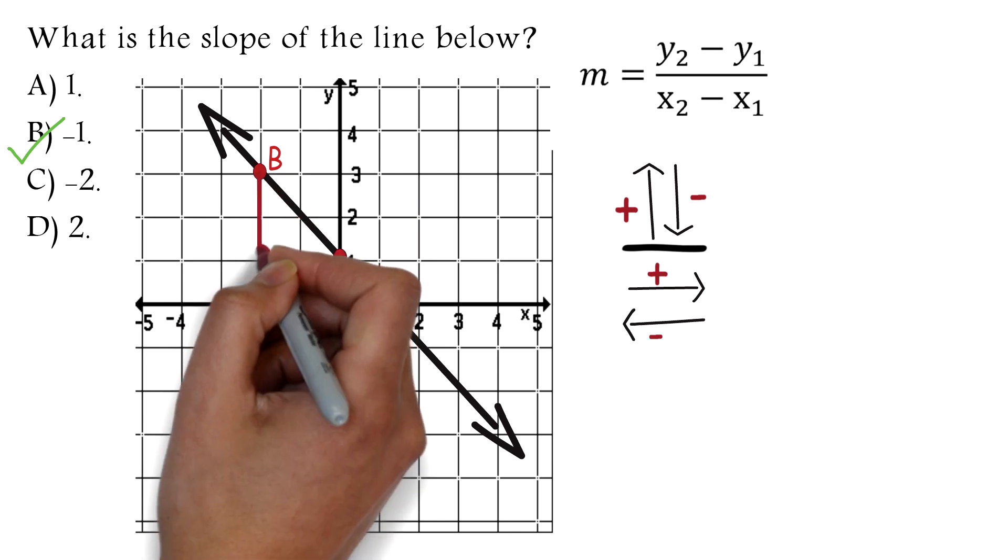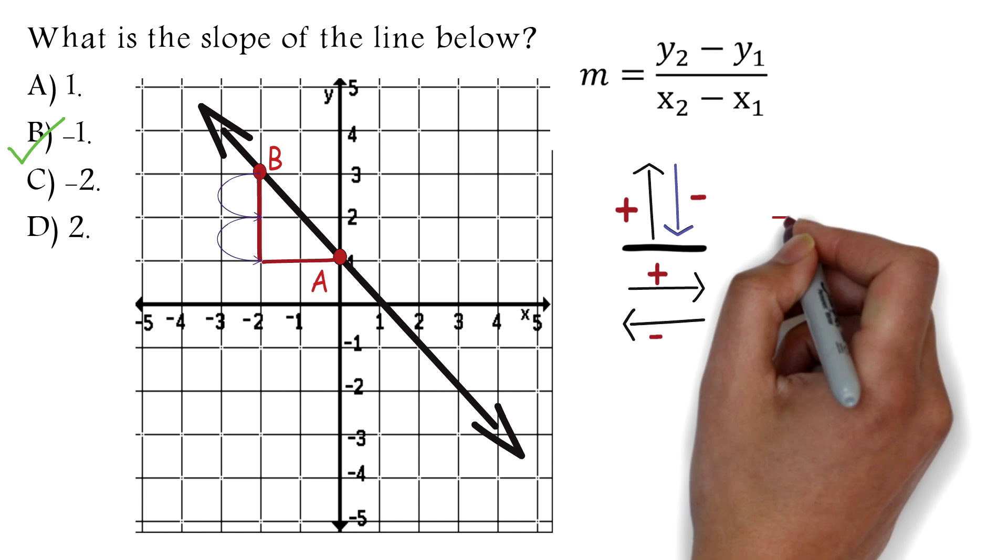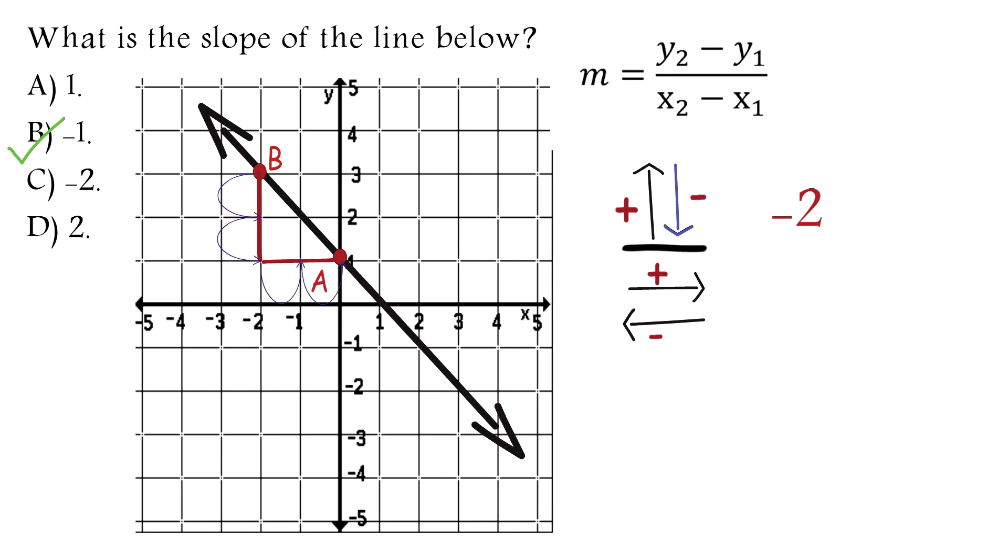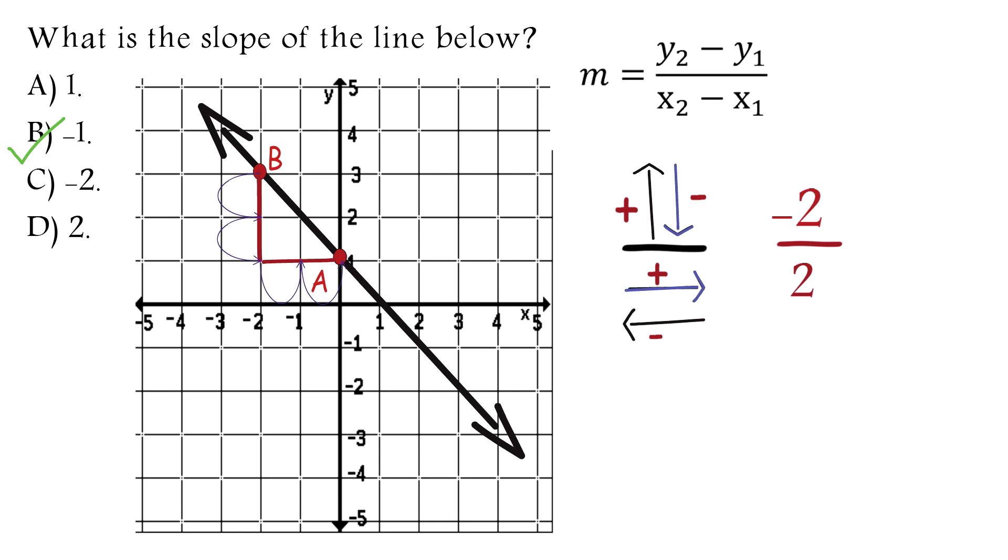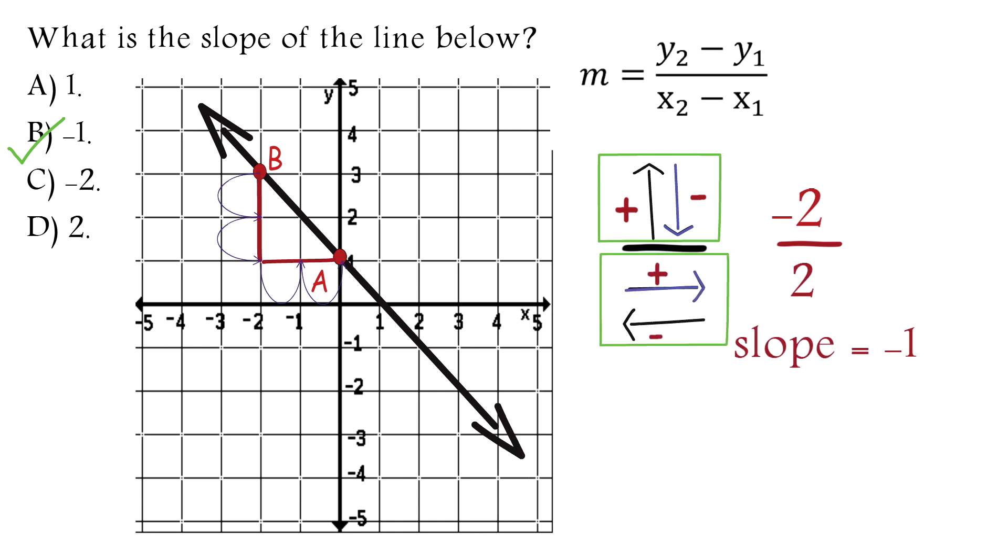I am choosing these two points. Let's call it A and B. You can choose any two points on the line. However, it is important to choose points that will make your work easier. Choose points whose X and Y values can be easily determined. Normally, points at the corners are best. Now to find the slope, all we are doing is moving from one point of the line to the other on the slope triangle. Let's move from B to A. We moved down two points. Notice moving down is negative. So we have negative 2 here. Then we will move to the right two points to get to A. Notice that moving to the right is positive. We have 2 here. Negative 2 over positive 2 is negative 1. So our slope is negative 1.